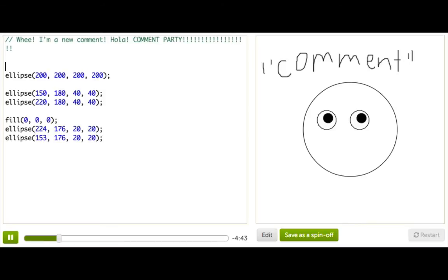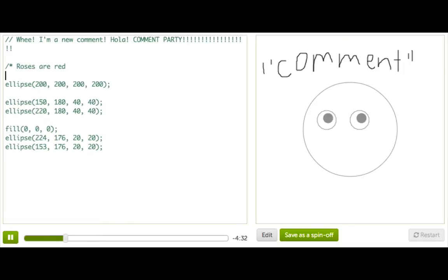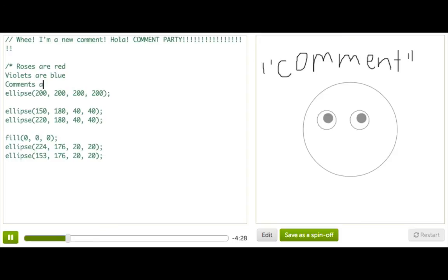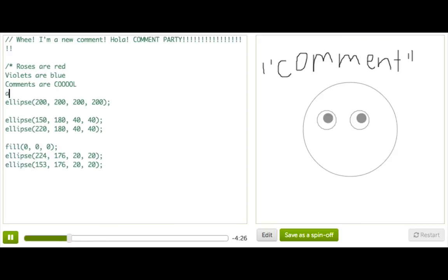But if our comment gets really long, you might want to do what's called a multi-line comment. To do that, we start off with a slash and a star. And maybe I'll write a poem here. So roses are red. Next line, violets are blue. Comments are cool. And so are you. Very nice.